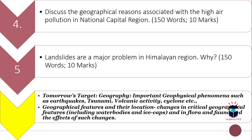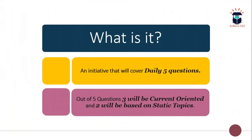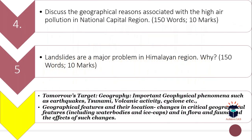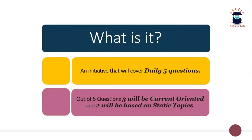For students seeing this video for the first time, let me explain what this initiative is all about. Daily five questions are given to you, of which three are current affairs oriented and two are static oriented, as seen in today's questions. We have a detailed 99-day super plan to complete your entire static syllabus from GS1 to GS4, with daily targets and questions framed from those topics. This timetable is shared with you in advance.